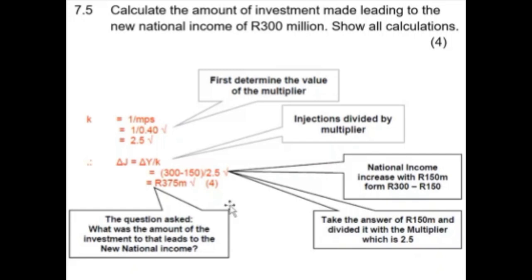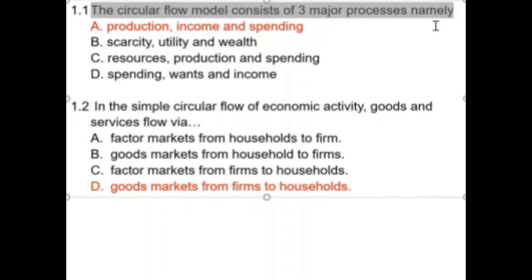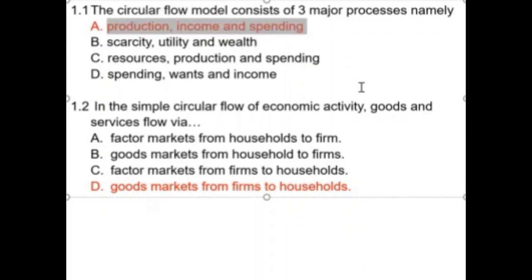Let's continue with the learners' self-assessment. These are old question papers — practice, practice, practice. The circular flow model consists of production, income, and spending, because if we look at the three ways to calculate GDP we have the production method, the income method, and the spending method.